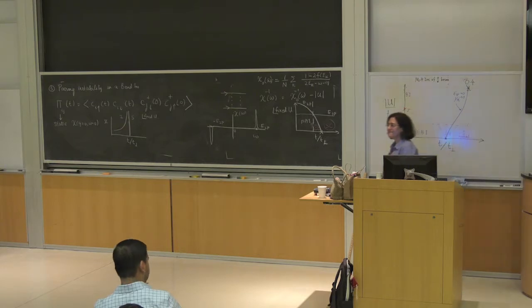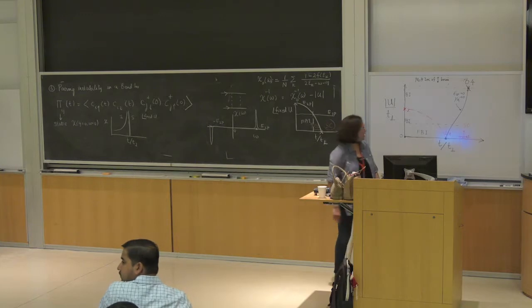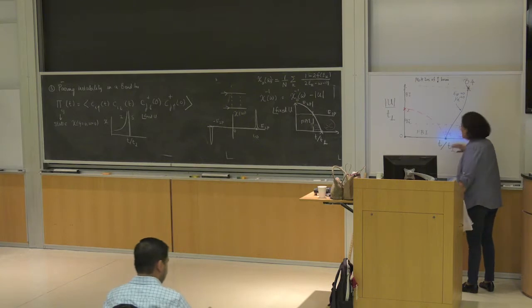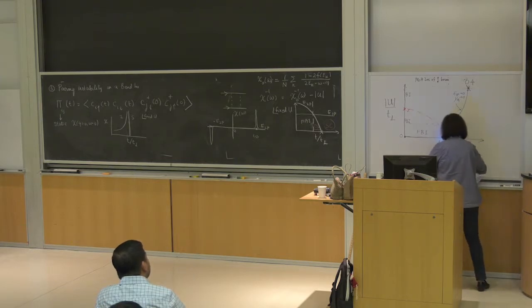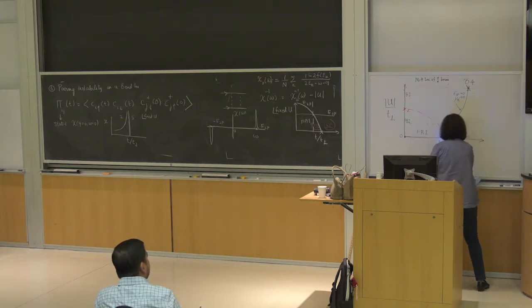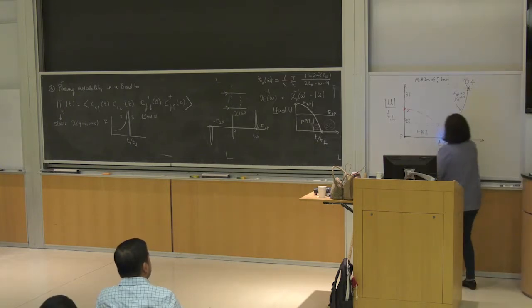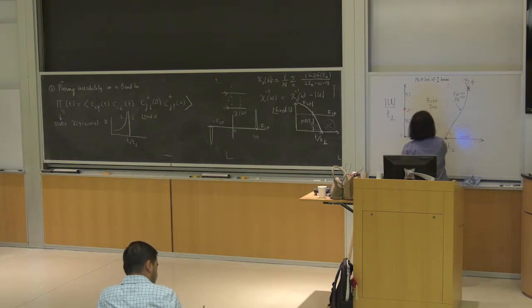How long will the metal phase and superconducting phase overlap? Here, the smallest U will drive it superconducting, so the metal really exists only on that line right here. This entire region is a Bose insulator.